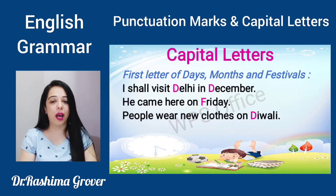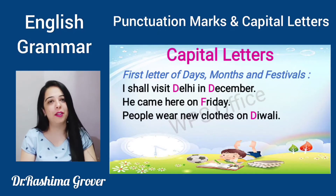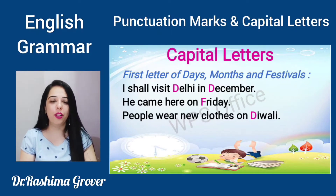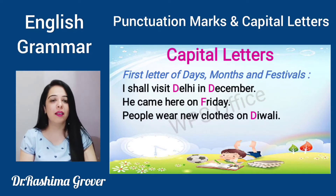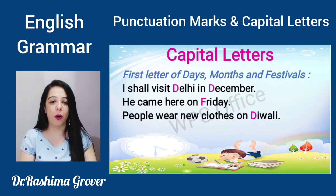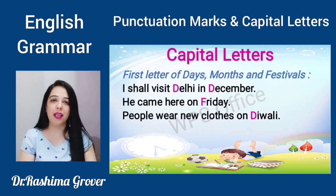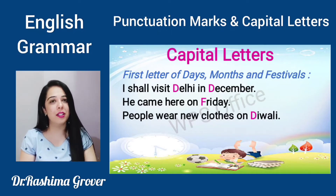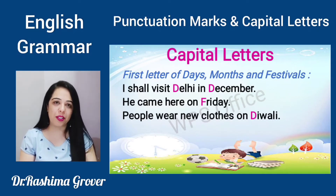Now, if we have to write the names of days, months or festivals, then also we have to write the first letter capital. For example, 'I shall visit Delhi in December.' December is the name of the month, so we will write D capital. Similarly, 'He came here on Friday.' Friday is the name of a day, so days ke name bhi hume capital letters se begin karne hain. Similarly, 'People wear new clothes on Diwali.' Diwali is the name of a festival, so we will write D capital.